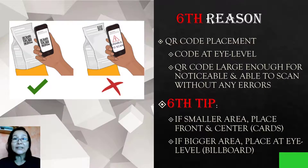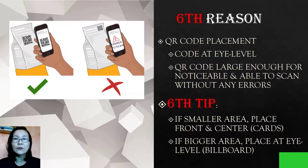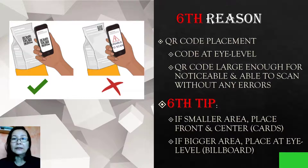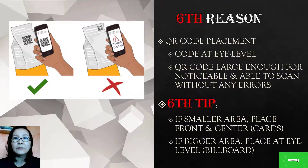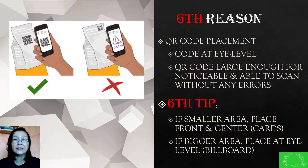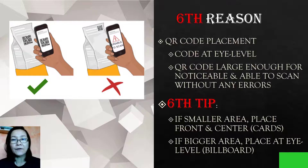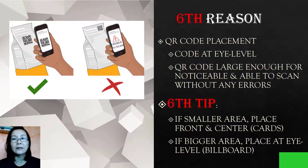The sixth reason is the placement of the QR code. Make sure the code is placed at a high level and that the QR code is large enough, noticeable, and able to be scanned without any errors. The sixth tip is: if it's a smaller area, place it front and center; and if it's a bigger area, make sure it's placed at a high level.